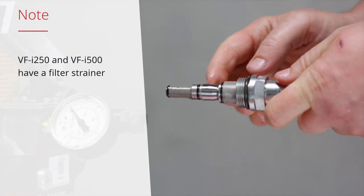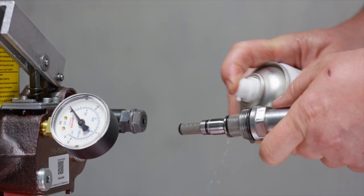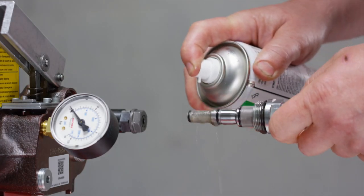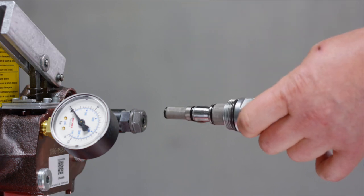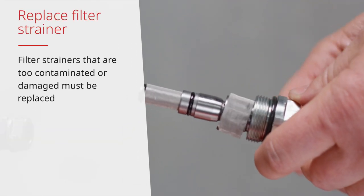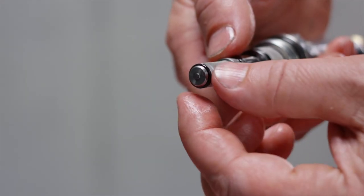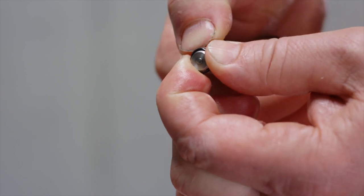Check the outer surface of the filter strainer for contamination. Clean if necessary with a suitable cleaning agent. Filter strainers that are too contaminated or damaged must be replaced under all circumstances.